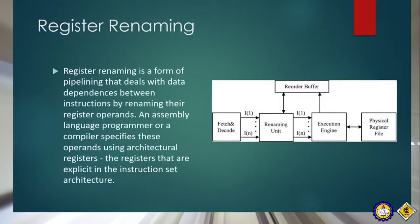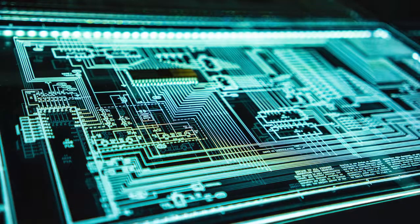The last topic we are going to cover is register renaming. Register renaming is a form of pipelining that deals with data dependencies — it works by renaming the register operands. In assembly language, a programmer or a compiler specifies these operands using architectural registers implicit in the instruction set architecture. As time goes on, CPUs are still upgrading, and innovators are still reaching the goal of creating the fastest CPUs for great performance. That's it — thank you and have a good day.